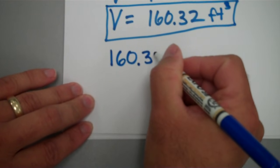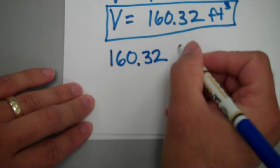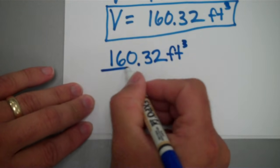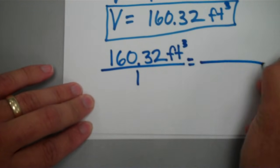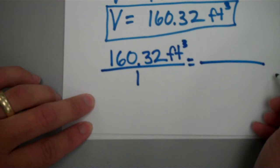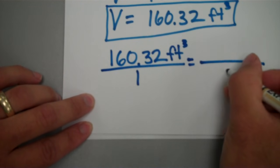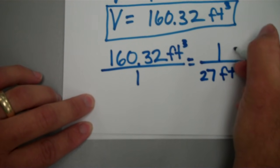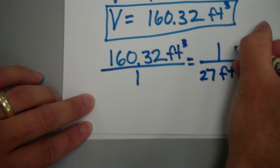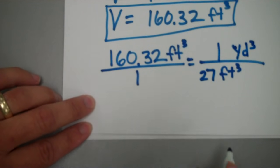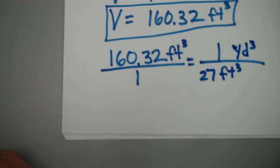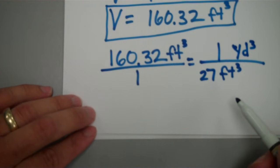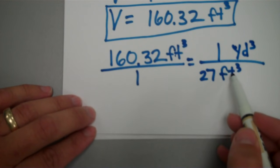I go ahead and put down 160 feet cubed, put it over 1. Put on the other side and I want to put on this side feet cubed. There's 27 and 1 yard cubed. This is just going through the technical way of it and I'm just going to show you how things cancel out. If you look here, this is foot cubed, this is foot cubed. They cancel out.